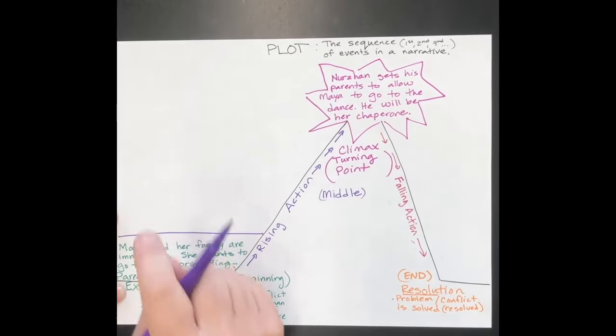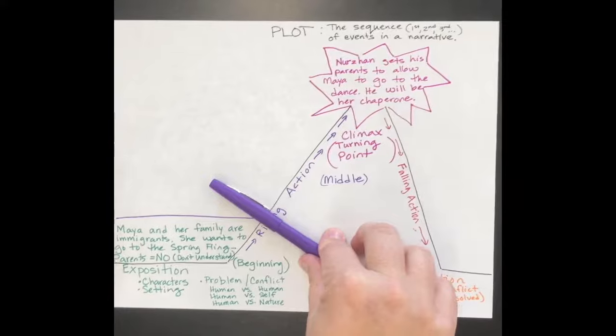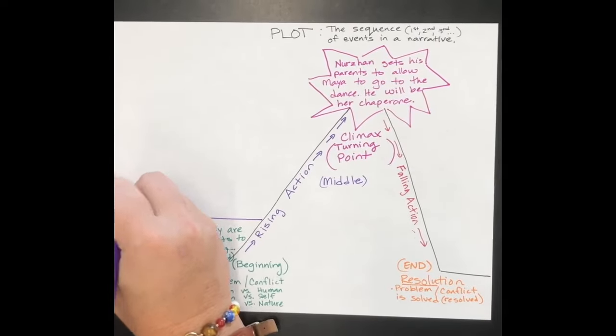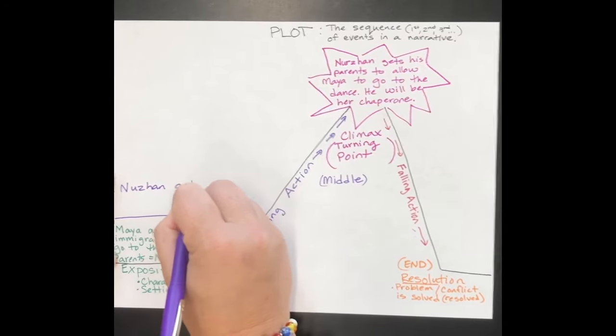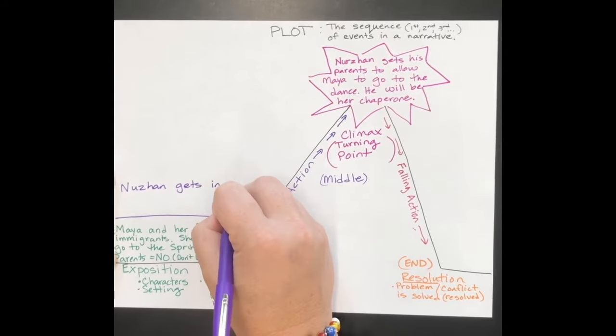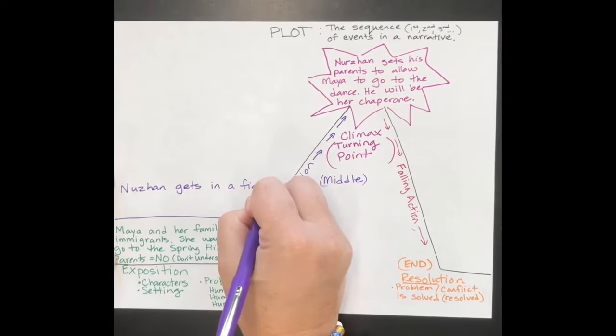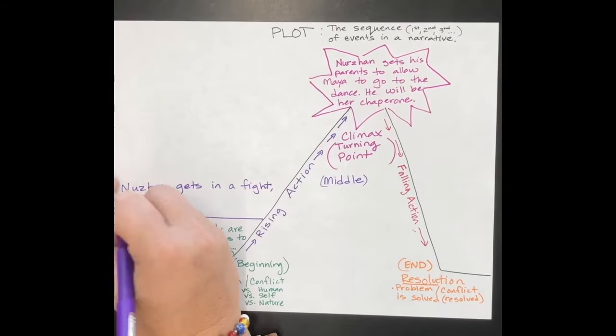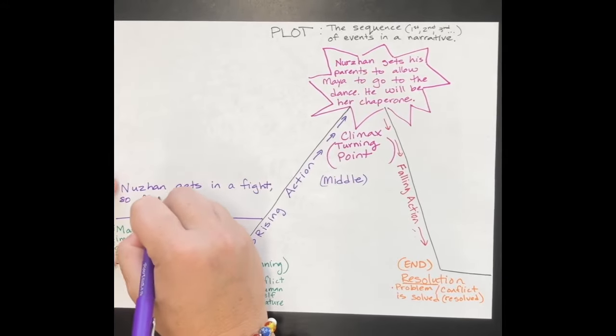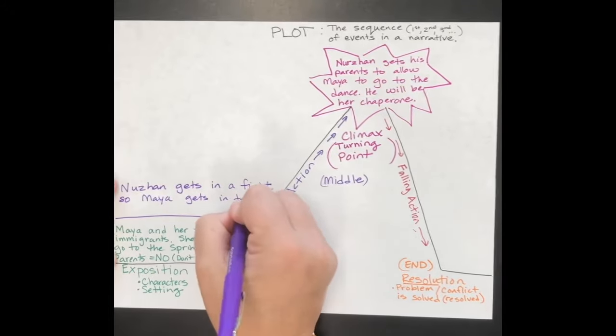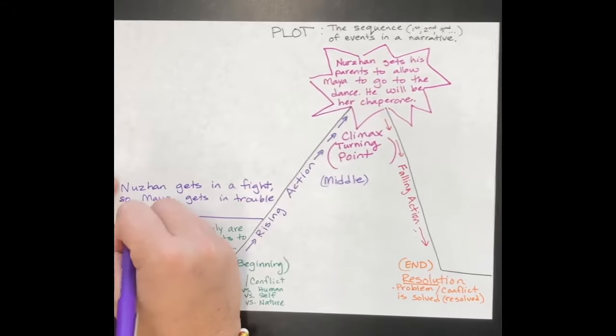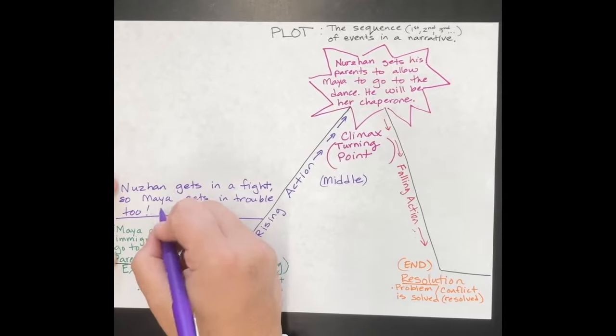Let's think about what happened in the story that led up to that. What made it seem like Maya would never get to go to the dance? First, Nershon gets in trouble—he gets in a fight. If you're an older sibling, you might understand how Nershon gets in a fight at school and somehow Maya also gets into trouble.